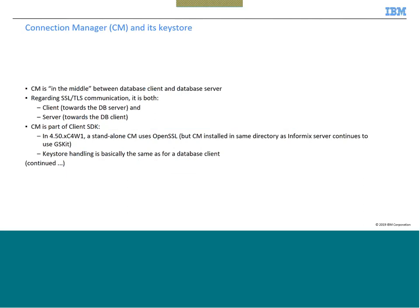Now let's see the differences for the connection manager's keystore. The connection manager acts as a middleman between the database client and database server — acting as a client towards the database server and as a server towards the database client. In 4.50 XC4W1, a standalone connection manager uses OpenSSL. But if the connection manager is co-located within the Informix server, it will still continue to use GSKit, and in that case keystore conversion is not required.